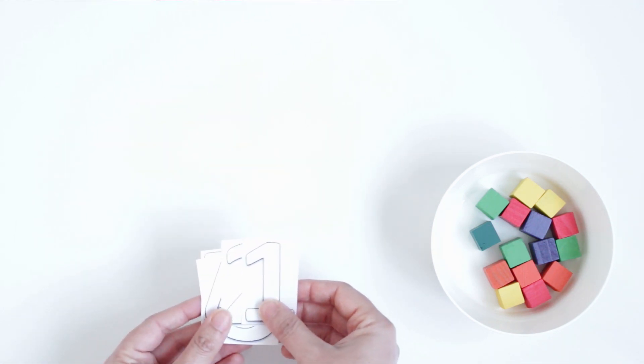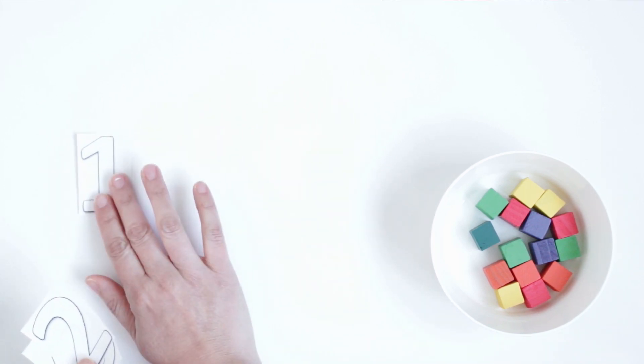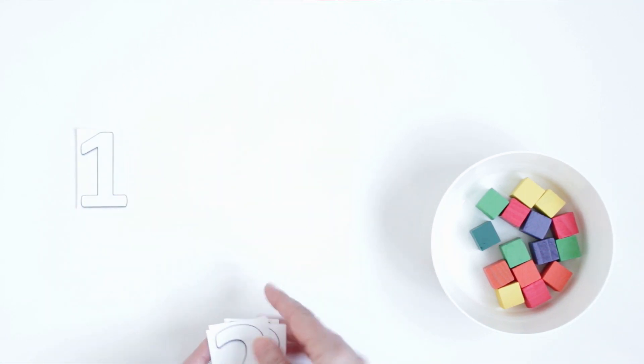You just need to show the kid the order of these numbers. So you need to show them to put one first, and then